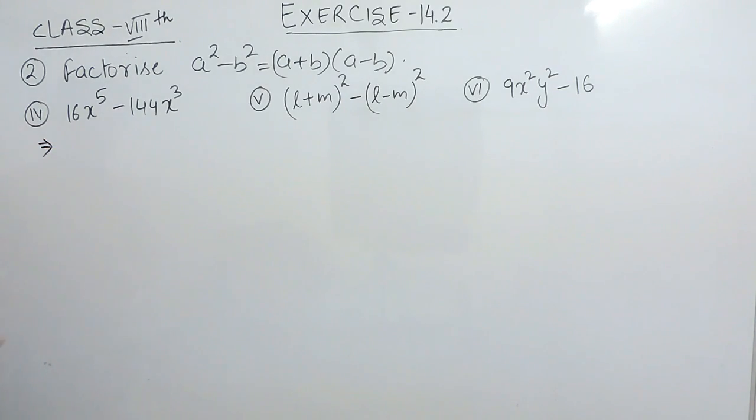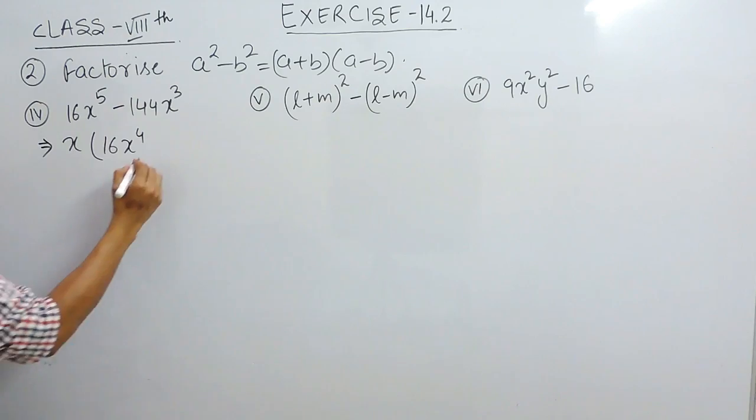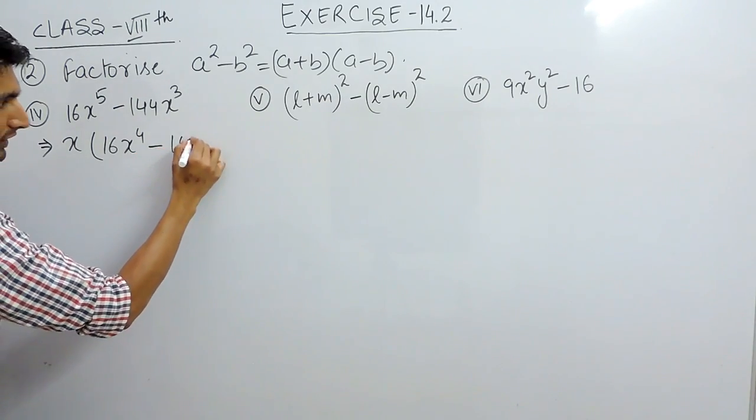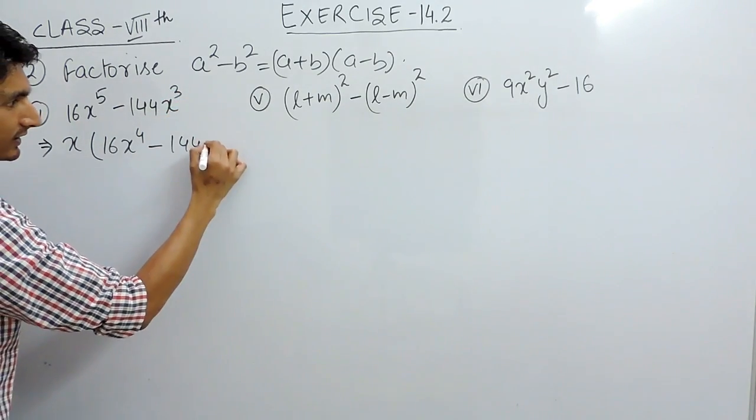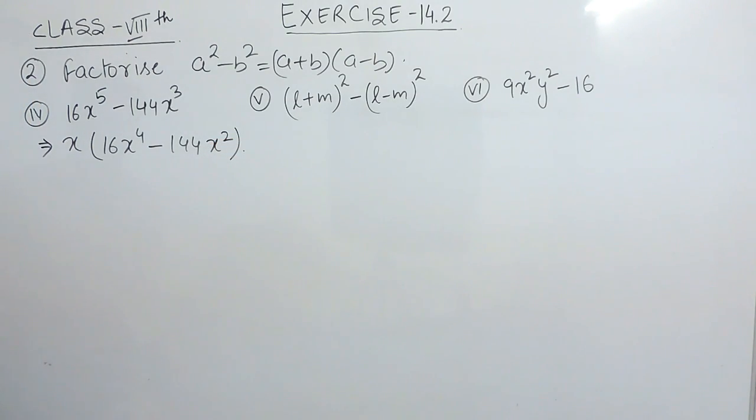To factorize this expression, because this is x raised to power 5, to make it raised to power 2, let's take x common. So from 16x⁵, if one x is taken out, only x⁴ will remain inside the bracket. And from 144x², if one x is taken out, only 144 will remain inside the bracket.